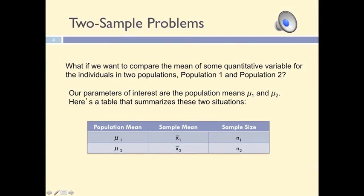In many research situations we want to compare two independent groups. With matched samples we test the same individuals twice, or we test pairs of individuals who are very similar in some respects, like twins for instance. When we work with independent samples, the two groups of individuals are randomly selected from two different populations. The term independent is used because the individuals in one sample must be completely unrelated to the individuals in the other sample.